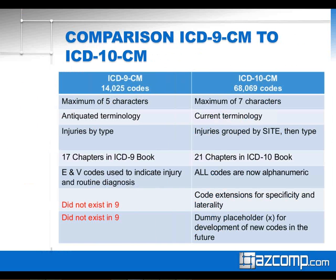A high-level comparison between ICD-9 and ICD-10: they differ in several ways. Under ICD-9, we are limited to five characters; we can now expand up to seven characters in ICD-10. We have some more antiquated terminology under ICD-9 that we'll be updating. Where we used to classify injury by type, injuries are now grouped by site and then type. Under ICD-9, only two alpha characters were included — either E or V — but under ICD-10, all codes will now be alphanumeric, and the whole alphabet is available. We also now have code extensions for specificity and laterality, and a new feature is dummy placeholders for the development of new codes in the future.